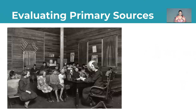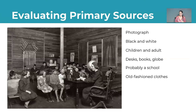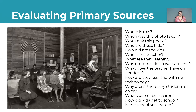As students evaluate primary sources using observe-think-wonder, you want them to start making observations and asking questions. Looking at the schoolhouse photo, they might start with: this is a photograph, it's in black and white, there are children and an adult, desks, books, a globe. Then they make inferences: this is probably a school, I see old-fashioned clothes, some bare feet. Then deeper analysis: those are all white students and I don't see any technology. Then they get into excellent questions about who, what, when, where, and why.